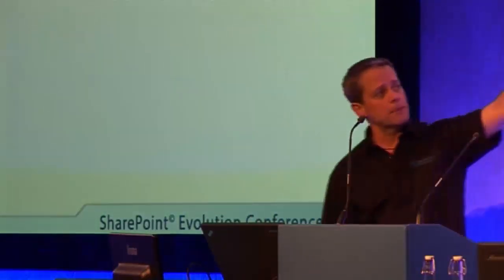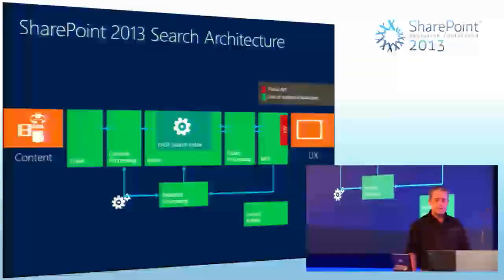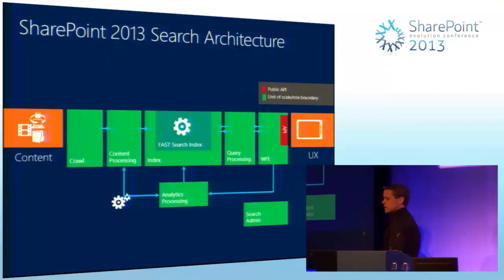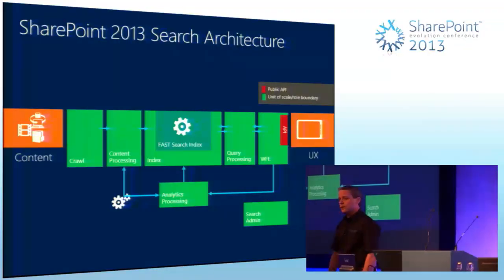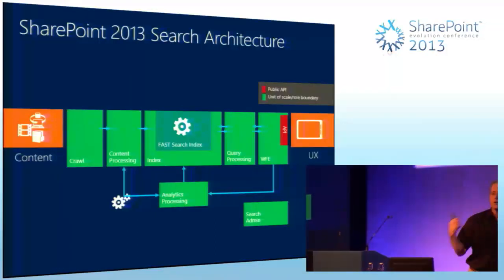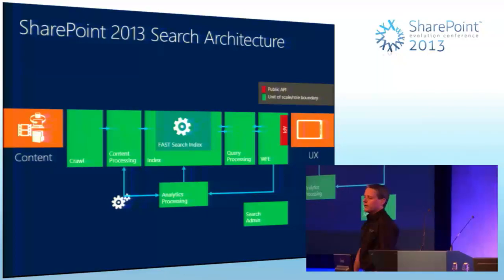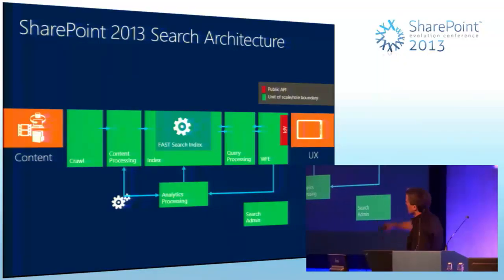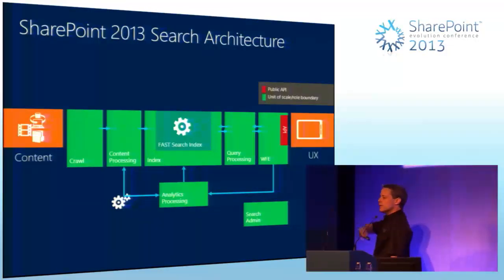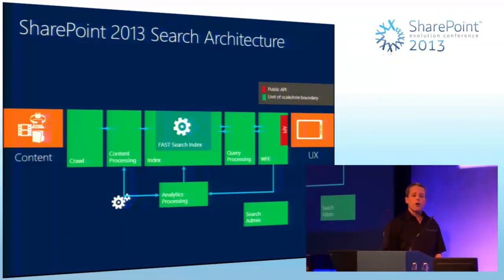This is the SharePoint 2013 search architecture. Everything in green for the IT guys is considered a unit of scalability — if your indexing is taking too long, add more indexers; if your crawling is taking too long, add more crawlers. The cool piece is that we have an API now running on our web front ends that allows us to make RESTful calls to search. No longer do I have to make SOAP calls against the query ASMX — I make RESTful calls using any SharePoint client-side technologies. On the back end, the crawl part is where we'd create our BCS custom connector.